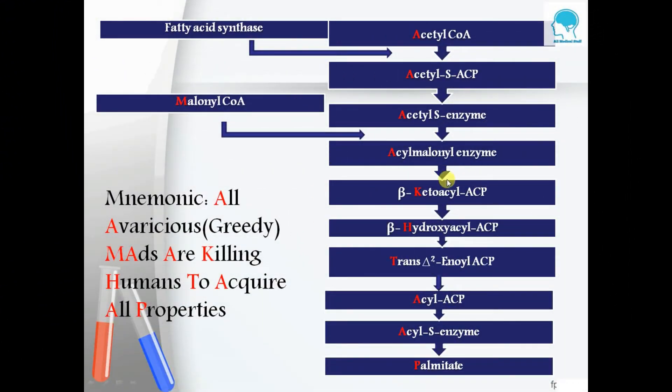We can remember all these steps by using a simple mnemonic: All Avaricious (that is Greedy) MAts Are Killing Humans To Acquire All Properties.